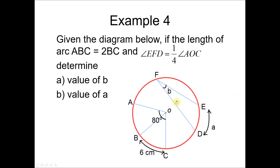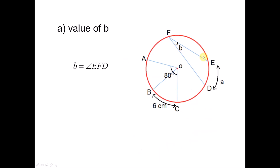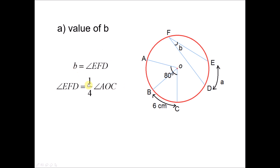Example 4: given the diagram, if the length of arc ABC equals double the arc BC (so if BC is 6, ABC is 12), and the angle EFD is one quarter of angle AOC which is 80 degrees — find the values of B and A. Since EFD equals one quarter of AOC, B equals one quarter of 80 degrees, which is 20 degrees.